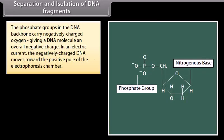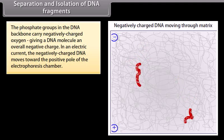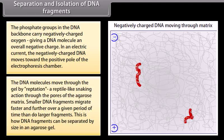The phosphate groups in the DNA backbone carry negatively charged oxygen, giving a DNA molecule an overall negative charge. In an electric current, the negatively charged DNA moves towards the positive pole of the electrophoresis chamber. The DNA molecules move through the gel by reptation — a reptile-like snaking action through the pores of the agarose matrix. Smaller DNA fragments migrate faster and further over a given period of time than larger fragments. This is how DNA fragments can be separated by size in an agarose gel.